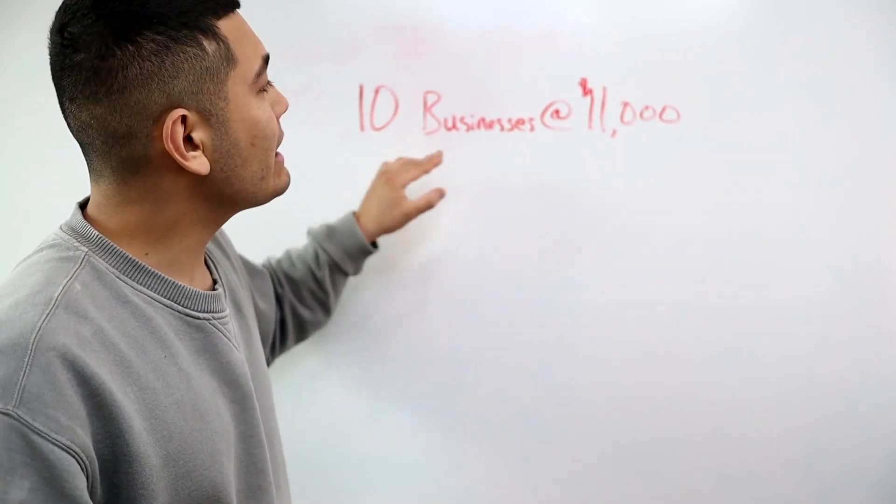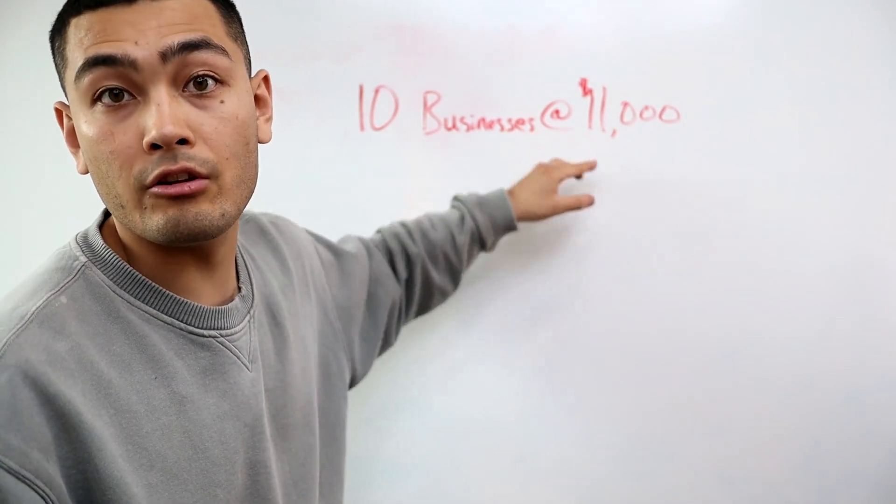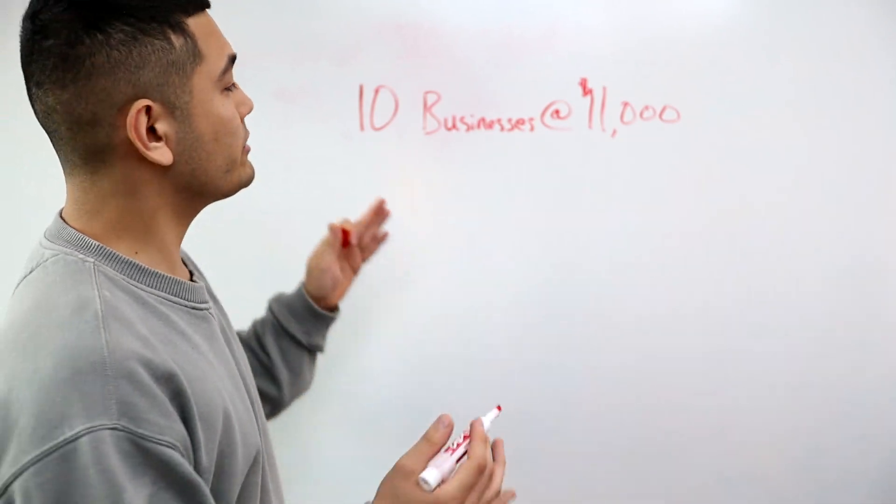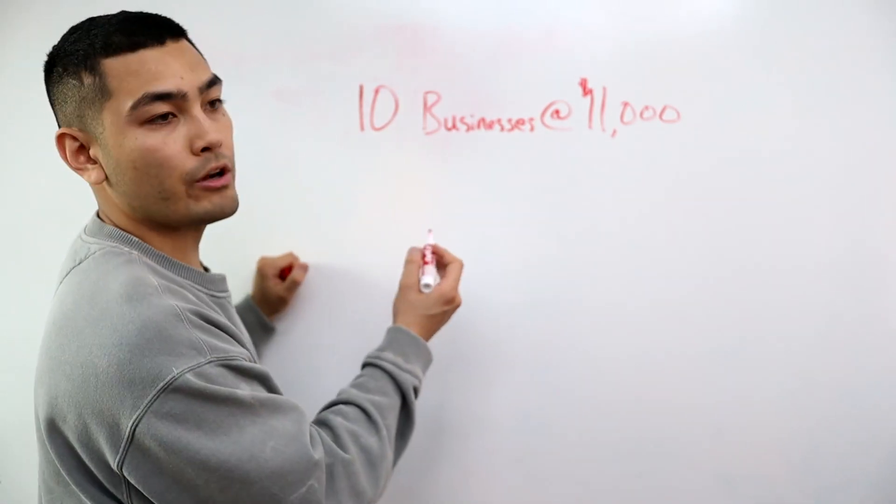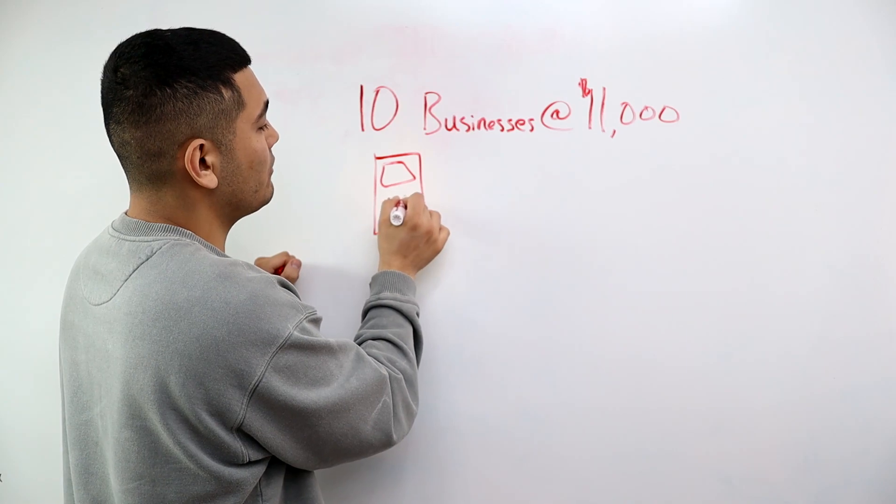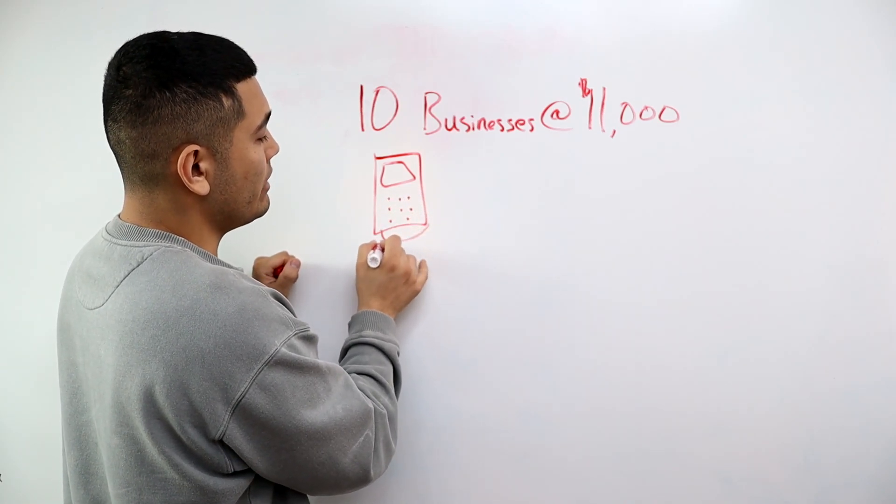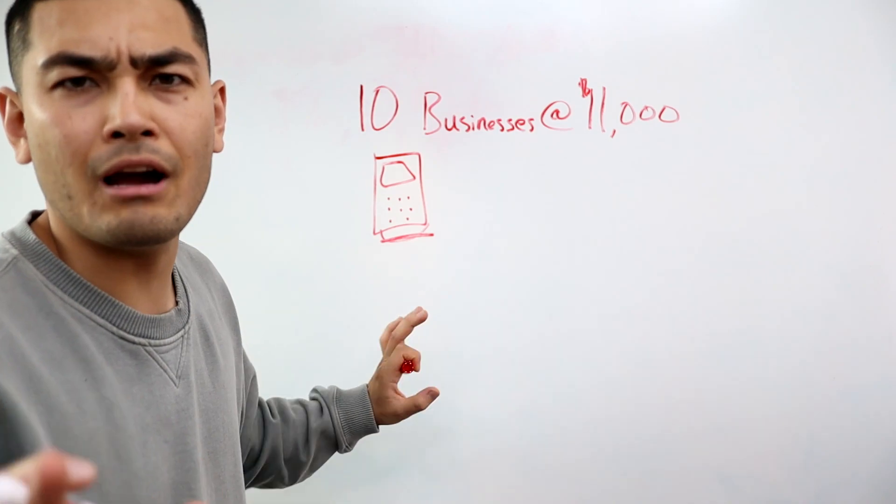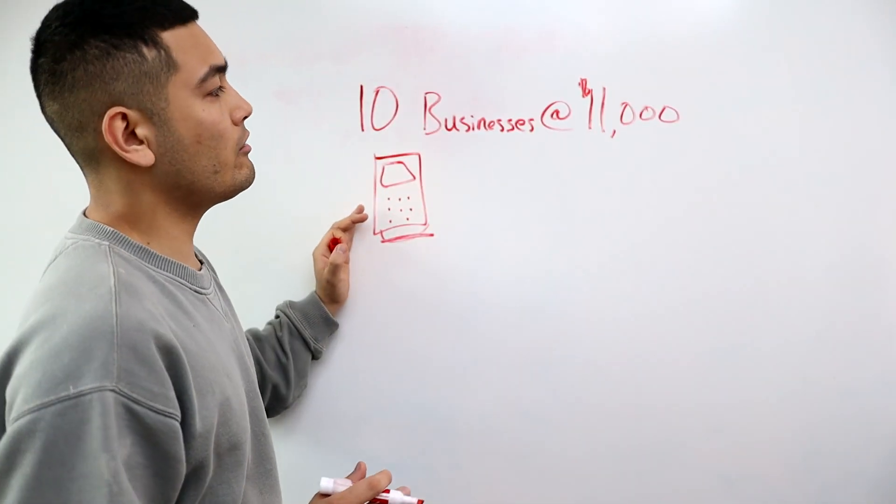And you guys can do the same too. So what happens if you have 10 of these businesses each doing $11,000 per month? You're going to set all 10 businesses up with a credit card reader. So here's my little credit card reader, and then you go ahead and you swipe your cards here. Don't mind my ugly drawing, but this is a credit card reader.